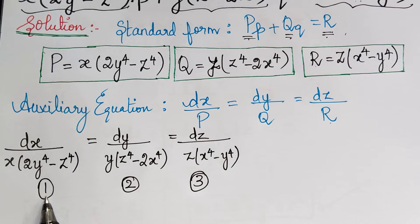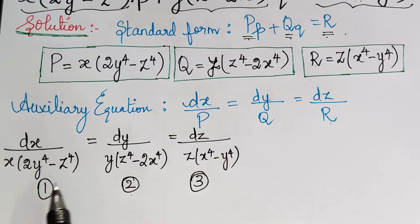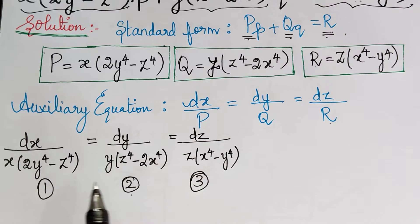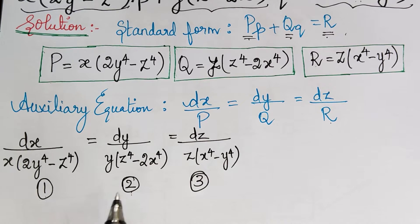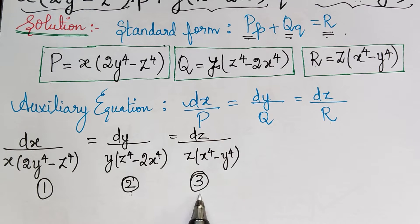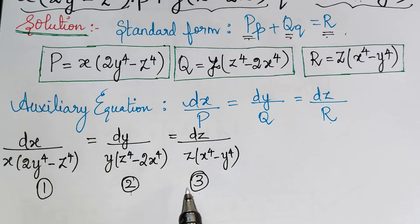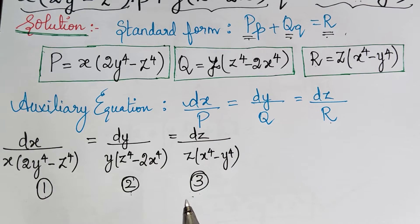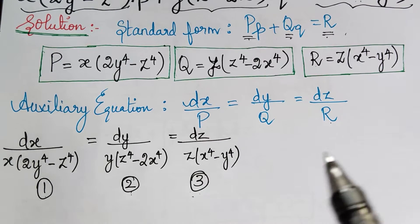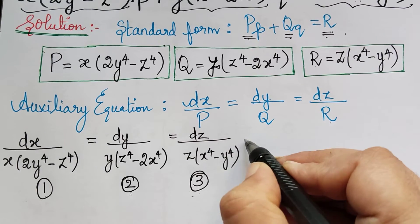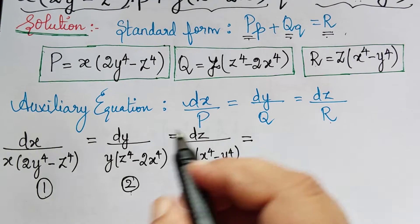While comparing ratio 1 and ratio 2, we see that we cannot do the variable separable method, and hence we cannot apply the method of grouping. The same case happens to ratios 2 and 3, and 1 and 3 when they are compared. For that reason we have to use the method of multipliers. To use the method of multipliers, we have to find a new ratio — the fourth ratio.